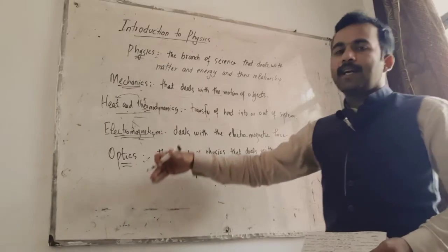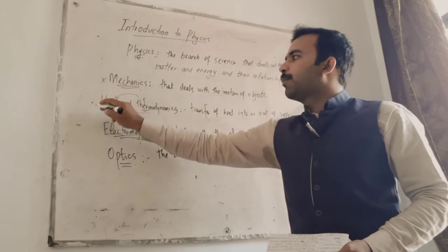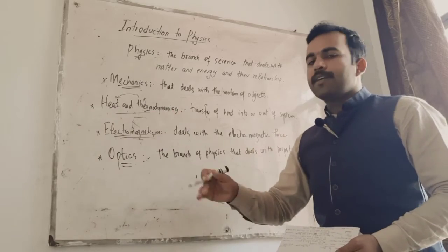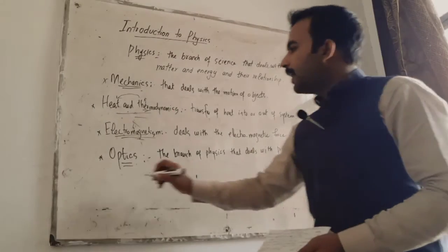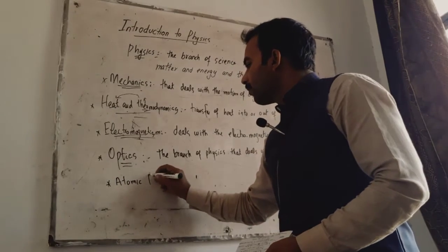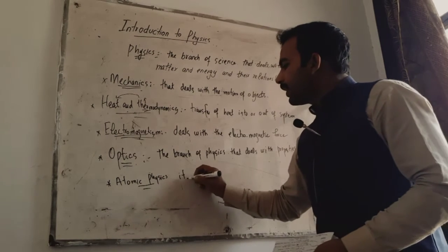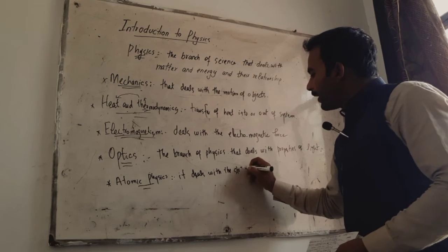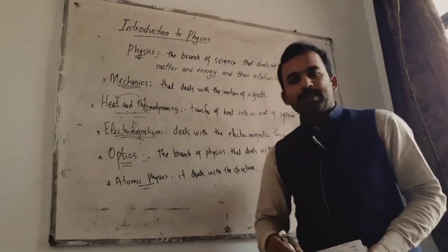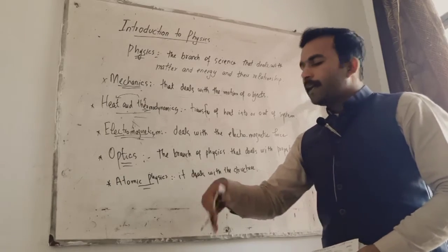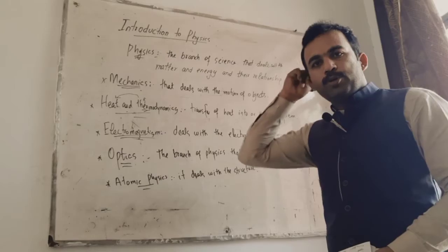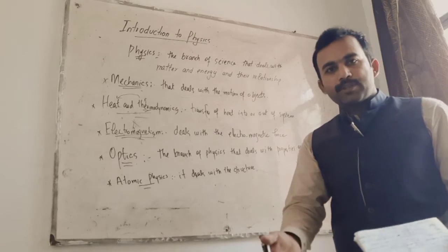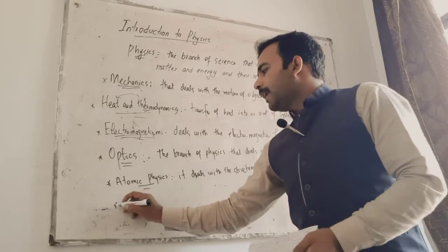These are different fields of physics you can study. The next branch is atomic physics, which deals with the structure of the atom — including the arrangement of electrons and neutrons at the atomic level. This branch is known as atomic physics.